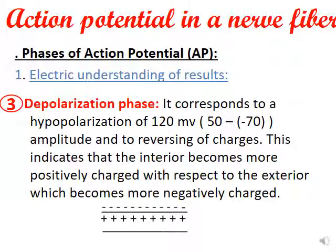Depolarization corresponds to hypopolarization — a decrease in negativity. The potential moves from minus 70 to about plus 50 millivolts, a change of 120 millivolts. This means the interior becomes more positively charged with respect to the exterior, which becomes more negatively charged — that is why we have depolarization.